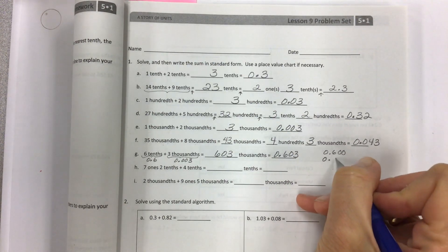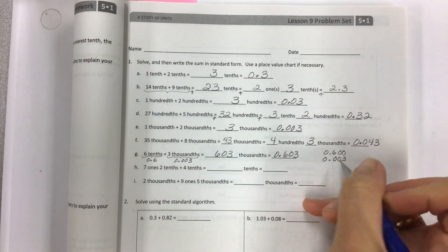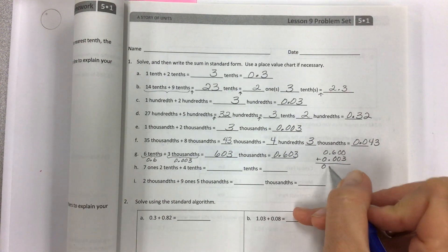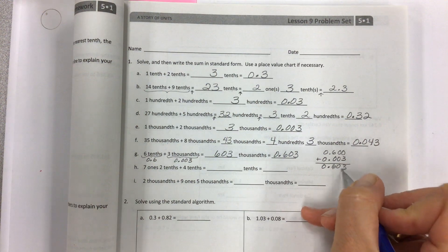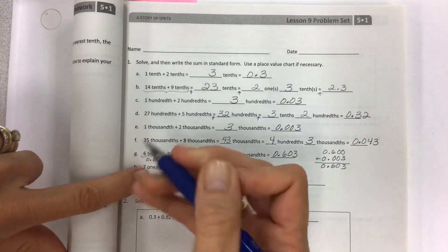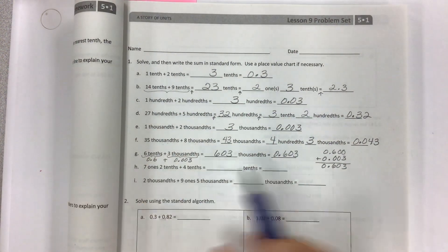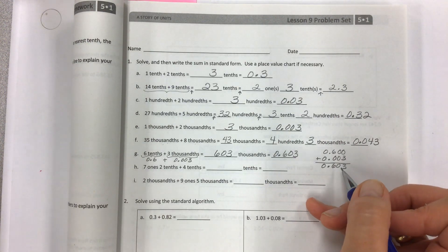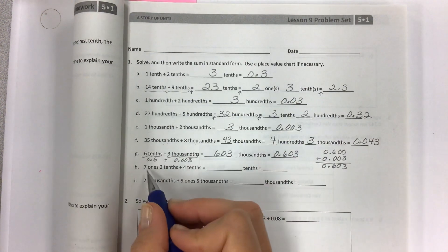What can help you is if you line things up. This is getting ready for the standard algorithm. Then this is what we're doing over on this side. We're doing horizontal versus vertical addition, which is much easier to see.